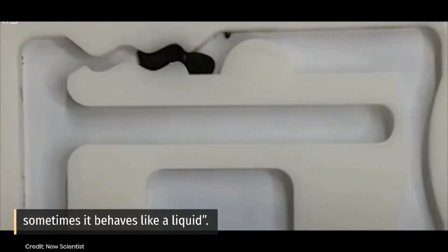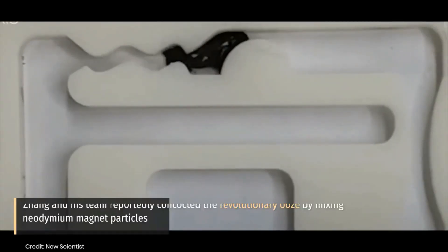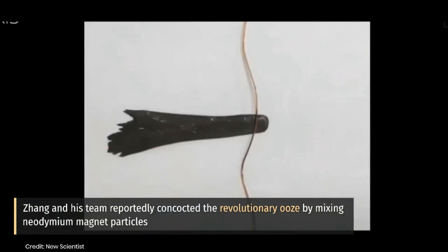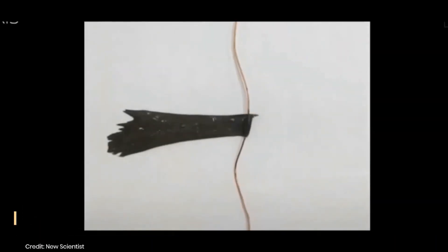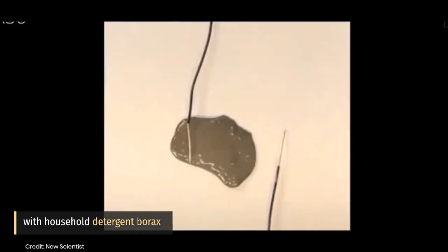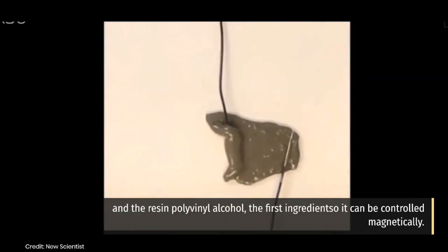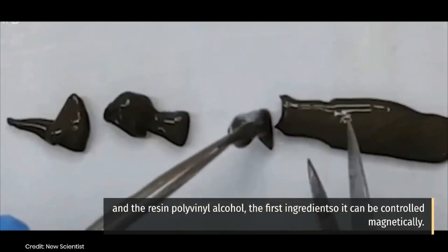Jang and his team reportedly concocted the revolutionary ooze by mixing neodymium magnet particles with household detergent borax and the resin polyvinyl alcohol. The magnetic particles allow it to be controlled magnetically.